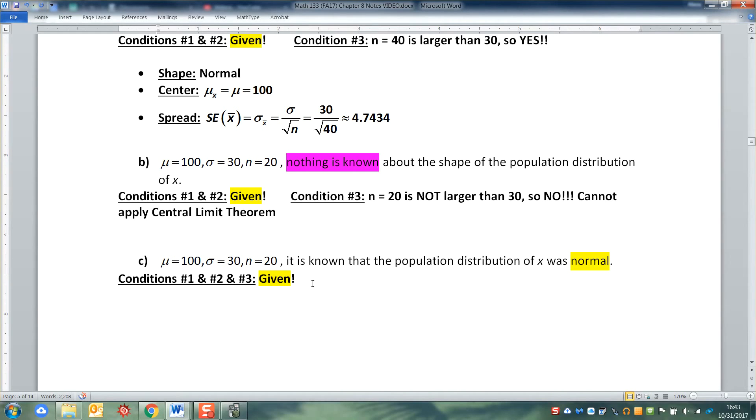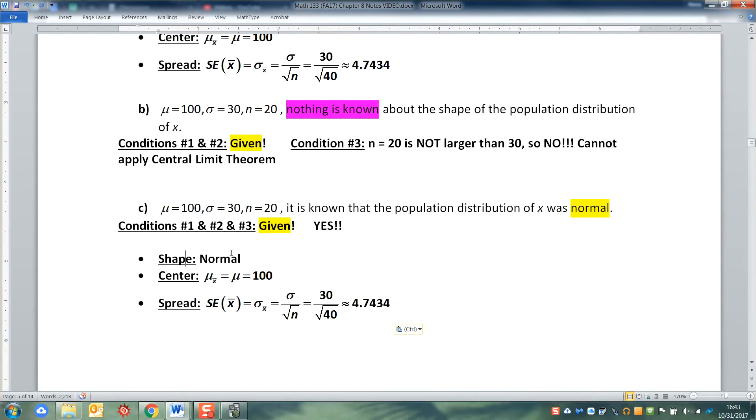So they're all given to you. So yes, yay. That means that we can apply the Central Limit Theorem. So we need a new shape, center, and spread. Well, the shape and the center aren't going to change. They're still normal. They're what they've always been. So normal, and the mean is still 100 here, because that's my μ.